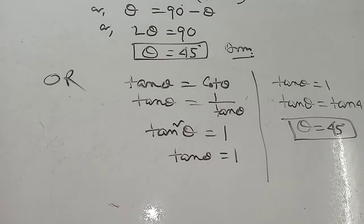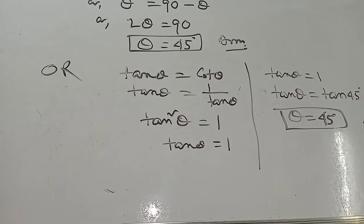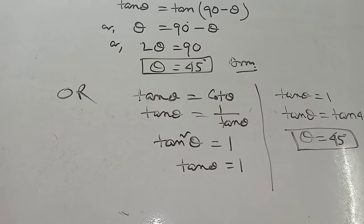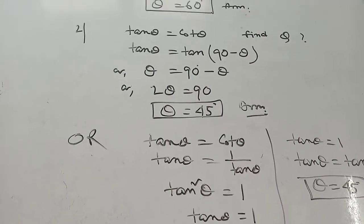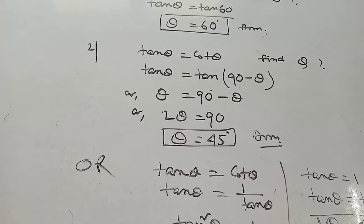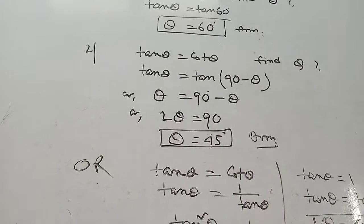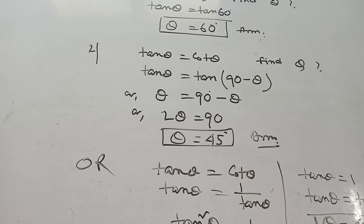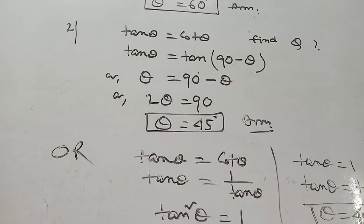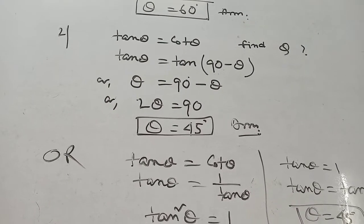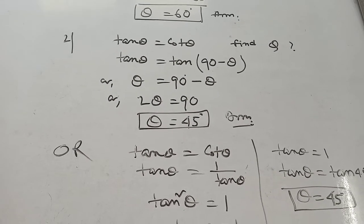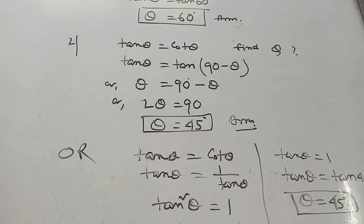If you find the Tan Theta value, then you can find any other value. If given, find Sin 2 Theta. That means Sin 2 into 45, which is Sin 90. That is 1.